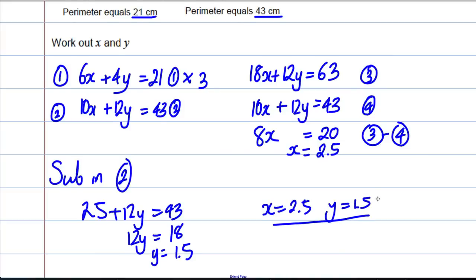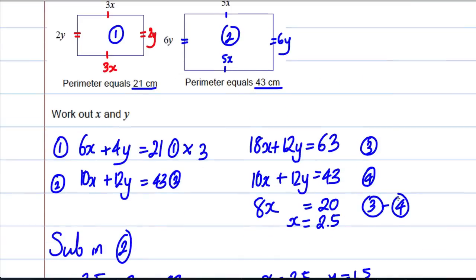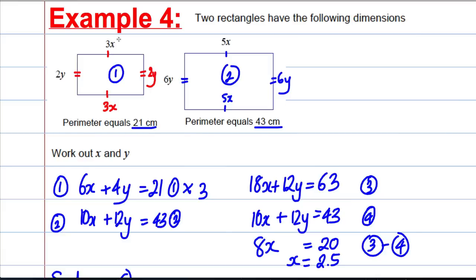Let's check it works. If X is 2.5, the side 3X is 7.5. Y is 1.5, so 2Y is 3. The sides 3, 3, 7.5, 7.5 add up to 21 — correct. If X is 2.5, the side 5X is 12.5, and 6Y is 9. The sides 12.5, 12.5, 9, 9 give us 43 — correct.